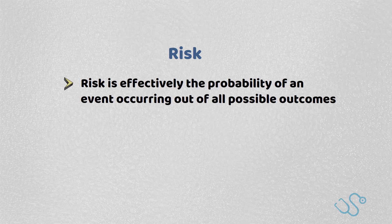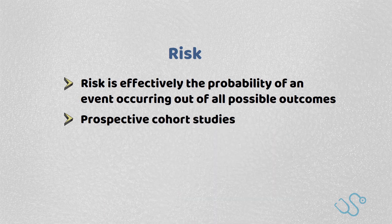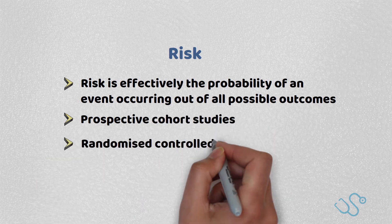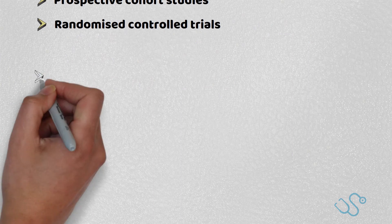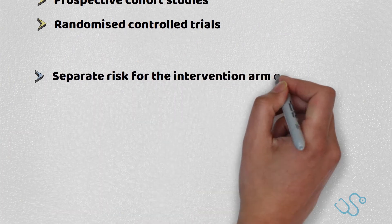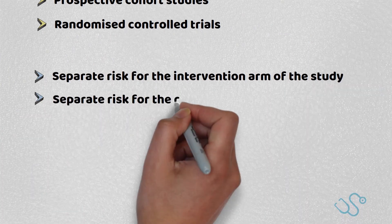We use risk in prospective cohort studies, or more specifically in randomised controlled trials. You get a separate risk for the intervention arm of the study and a separate risk for the control arm of the study.